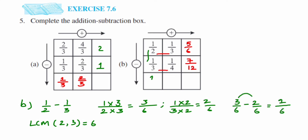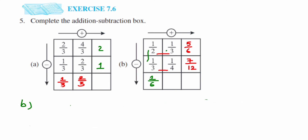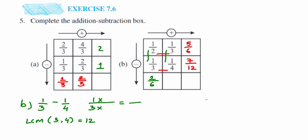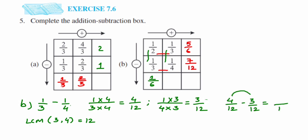Last subtraction: 1/3 minus 1/4. LCM of 3 and 4 is 12. For 1/3, multiply by 4 to get 4/12. For 1/4, multiply by 3 to get 3/12. Subtracting: 4/12 minus 3/12 — since they are now like fractions, subtract the numerators: 4 minus 3 equals 1. The answer is 1/12.